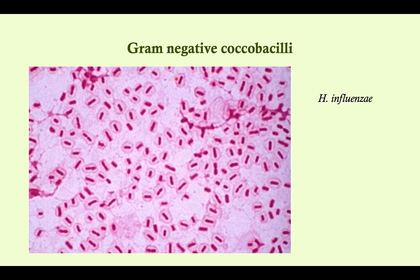Here you see gram-negative coccobacilli. The coccobacilli are not quite rods and not quite cocci — they're kind of in between. One thing you see with this particular one is that it has a capsule. Remember that capsules are very important because they give us an antigen that we can use to create a vaccine. This is Haemophilus influenzae — we don't know the type just by looking at it, but it is a coccobacillus with a capsule. You should know all your encapsulated bacteria.